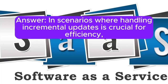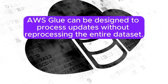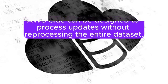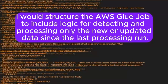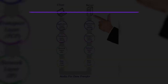In scenarios where handling incremental updates is crucial for efficiency, AWS Glue can be designed to process updates without reprocessing the entire dataset. I would structure the AWS Glue job to include logic for detecting and processing only the new or updated data since the last processing run.